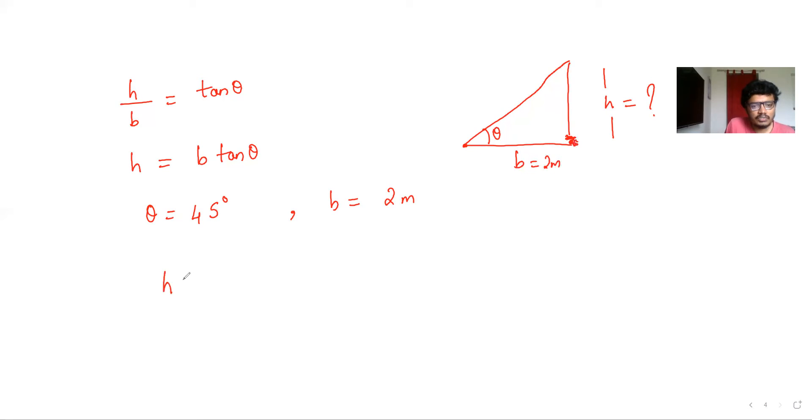So in this case h will be equal to 2 times tan 45 degrees, which is nothing but 2, and hence the height will be h = 2.